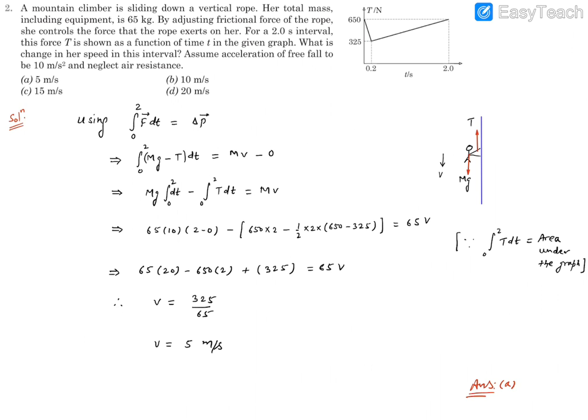So it's going to be area of the rectangle which is 650 into 2, then area of this triangle. Area of a triangle is half base, base is 2 into height which is going to be this difference which is 650 minus 325. So this entire term is going to express this integration value.